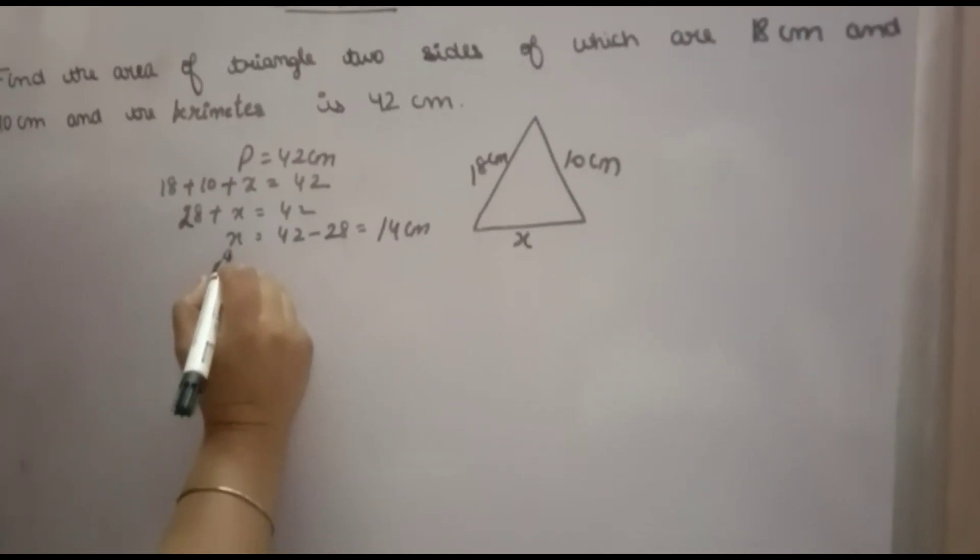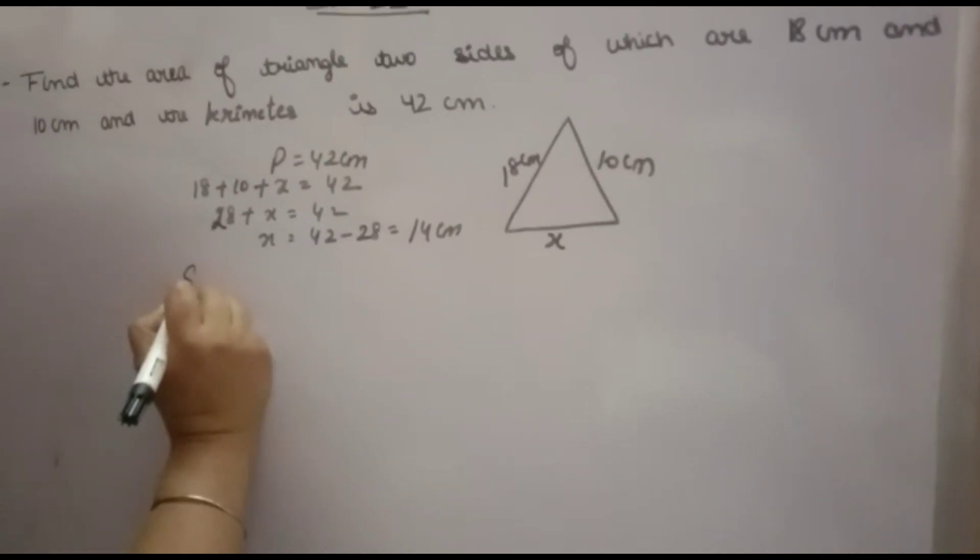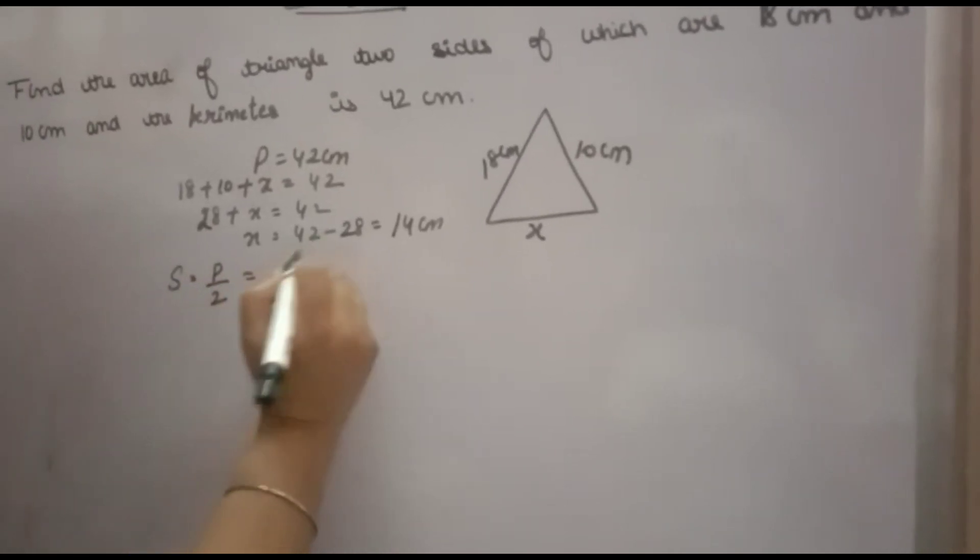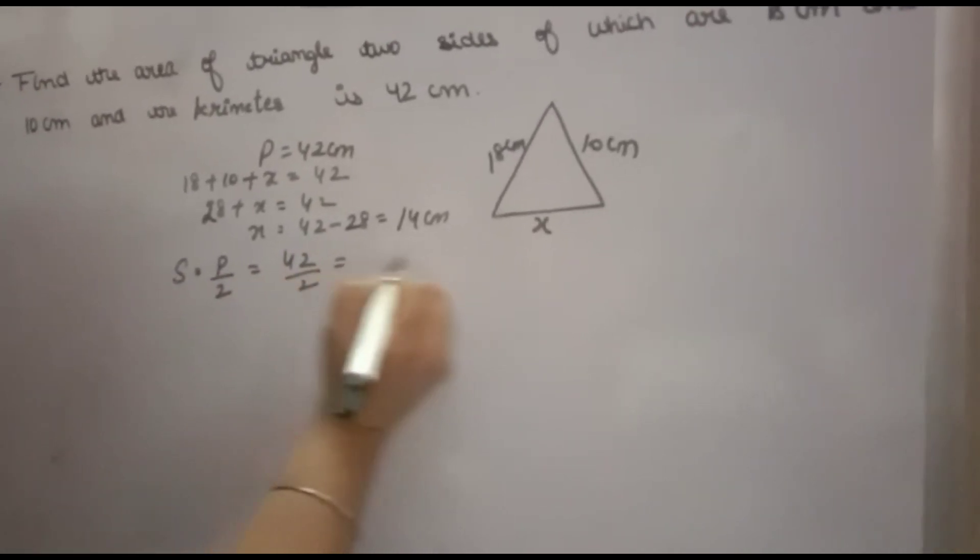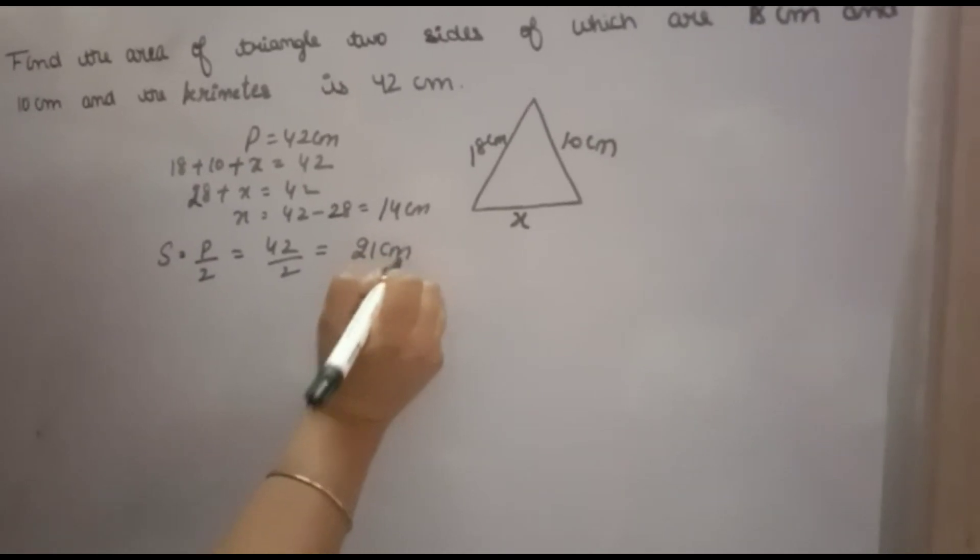Now for the semi-perimeter. Semi-perimeter means half of the perimeter, which is 42 ÷ 2 = 21 centimeters.